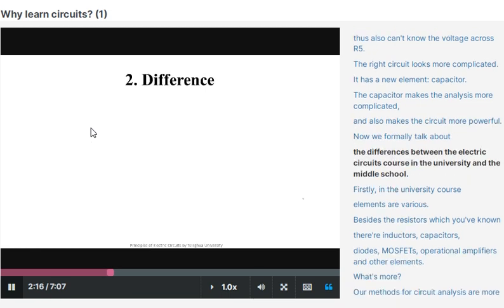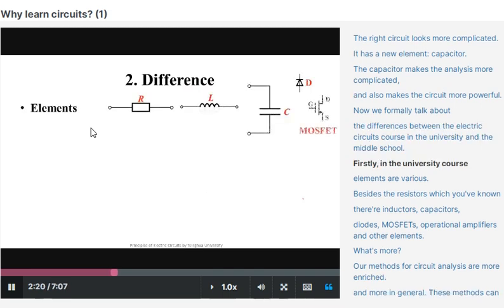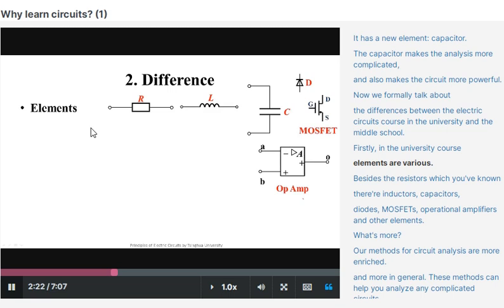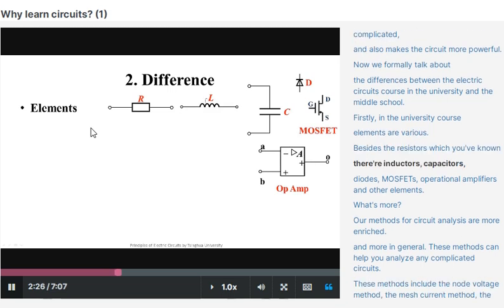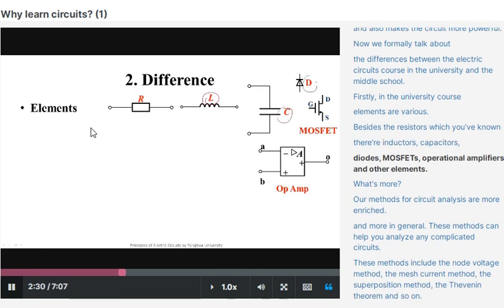Now we formally talk about the differences between the electric circuit course in university and middle school. Firstly, in the university course, elements are various. Besides the resistors, we should learn there are inductors, capacitors, diodes, MOSFETs, operational amplifiers, and other elements.